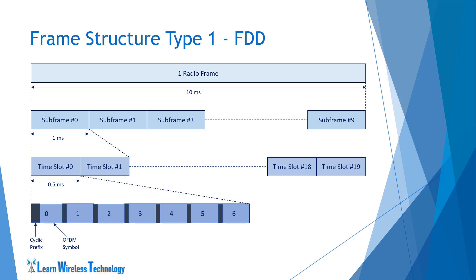When normal cyclic prefix is used, a time slot will have 7 OFDM symbols, and when extended cyclic prefix is used, a time slot will have 6 OFDM symbols. Cyclic prefixes are used to give protection to the transmitted data against inter-symbol interference and multipath delay spread so that the receiver can extract the complete signal without losing any data.